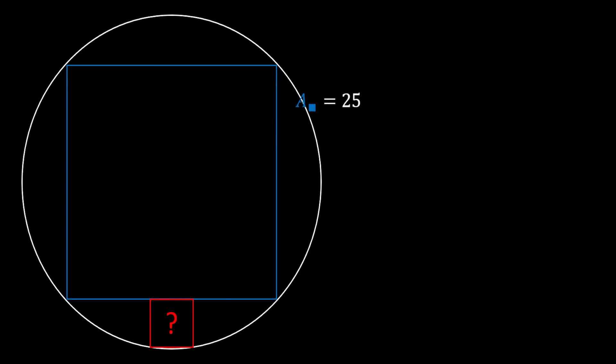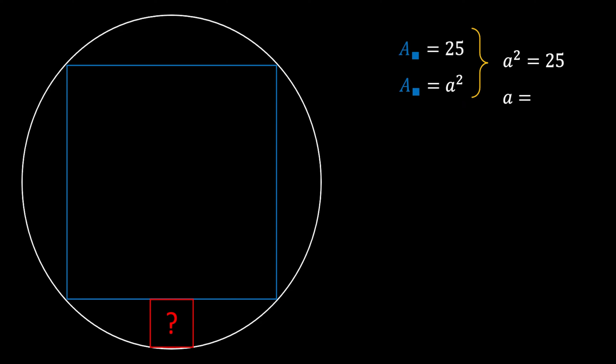Let's start with the area of the big blue square. Since its value is equal to 25, and the formula for the area of a square is a squared, we can see that a squared equals 25, which means a equals 5. So the side of our big blue square must be equal to 5.